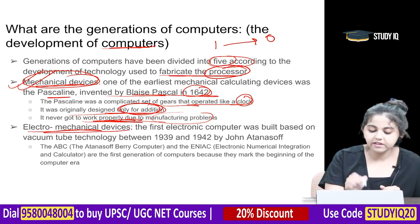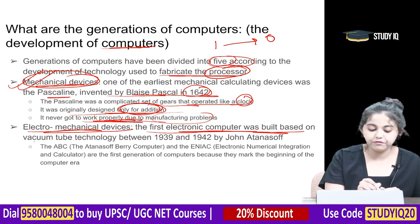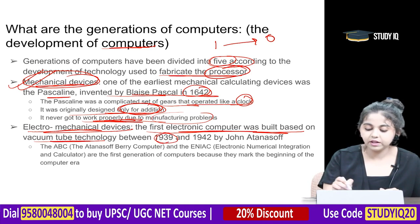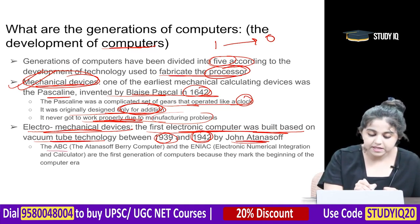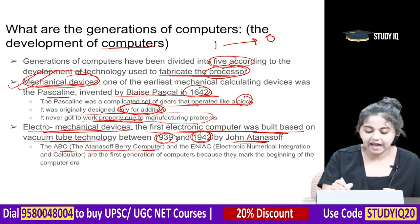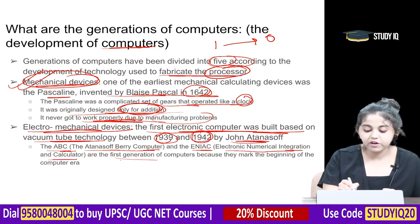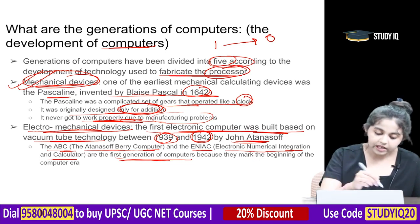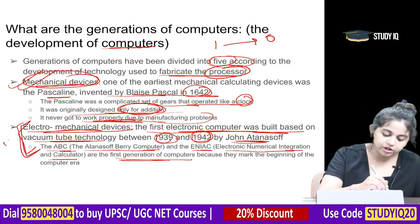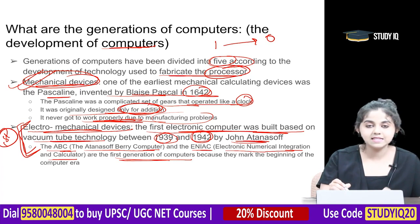Electromechanical devices then came in. The first electronic computer was built based on vacuum tube technology between 1939 and 1942. Examples include ABC — the Atanasoff-Berry Computer — and ENIAC, which marked the beginning of the computing era. The first generation of computers was started through the ABC and ENIAC development technology.